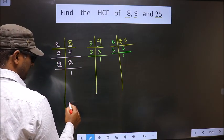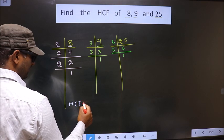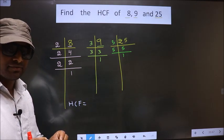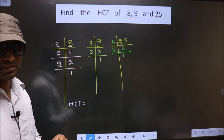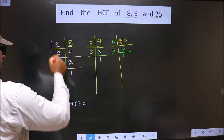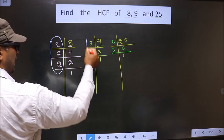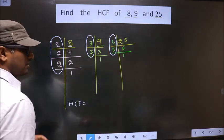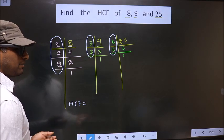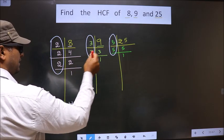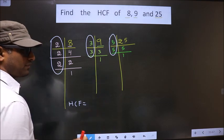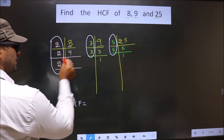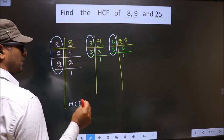Now, the HCF is the product of numbers that are present in all three factorizations. We need to find the numbers that are present here, here, and here. I repeat, we should find the numbers that are present in these three places. So, let us find.